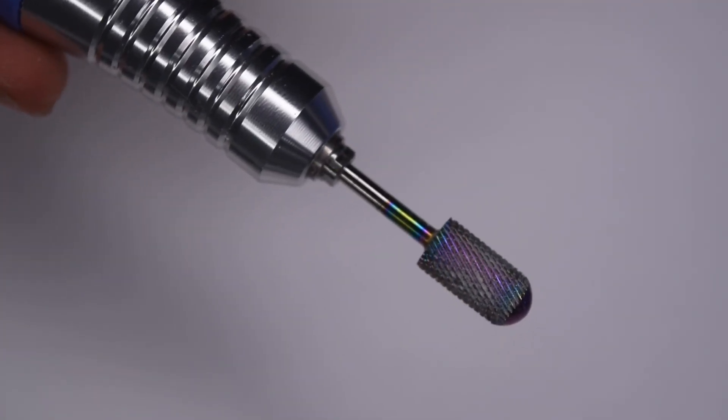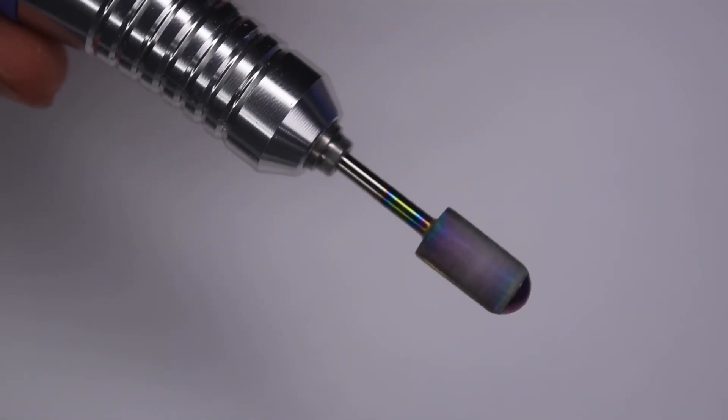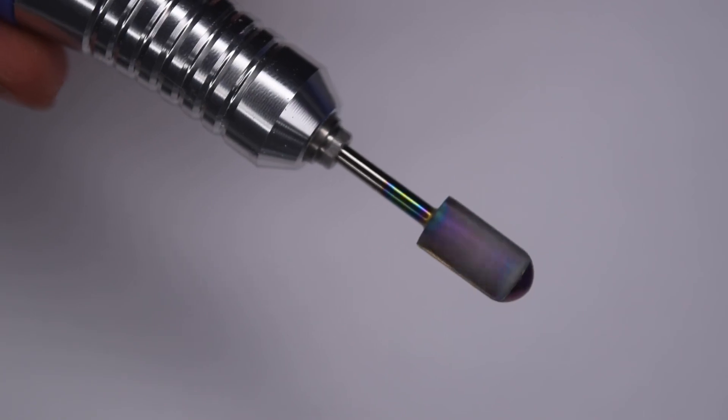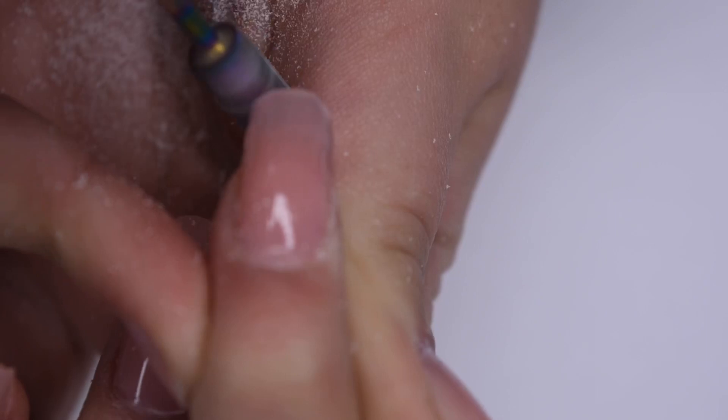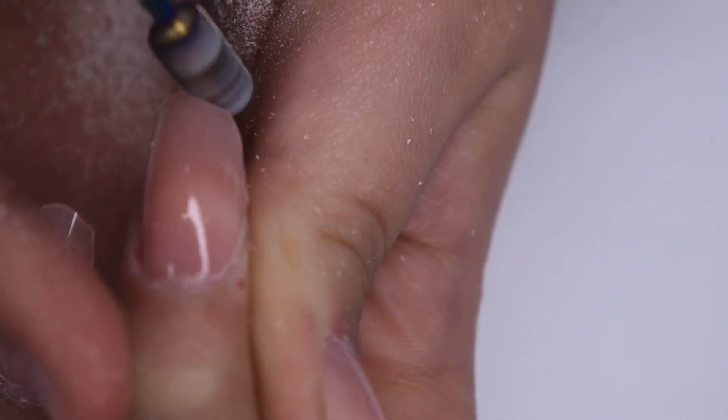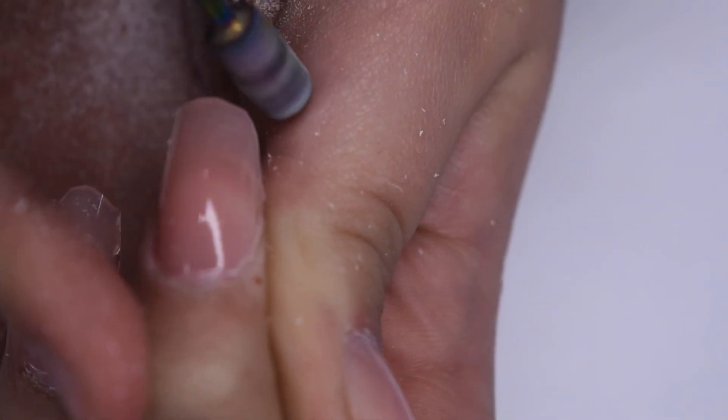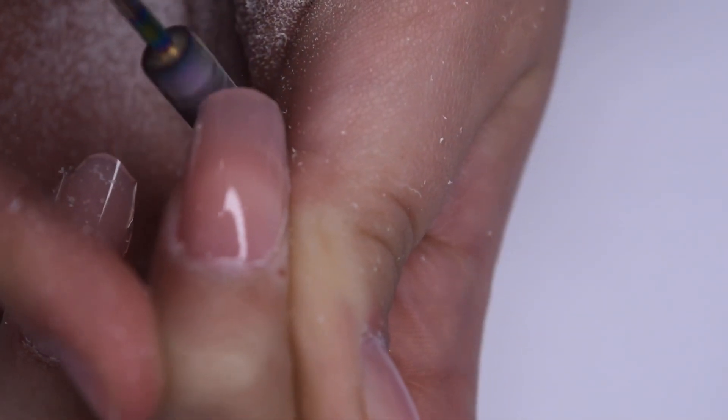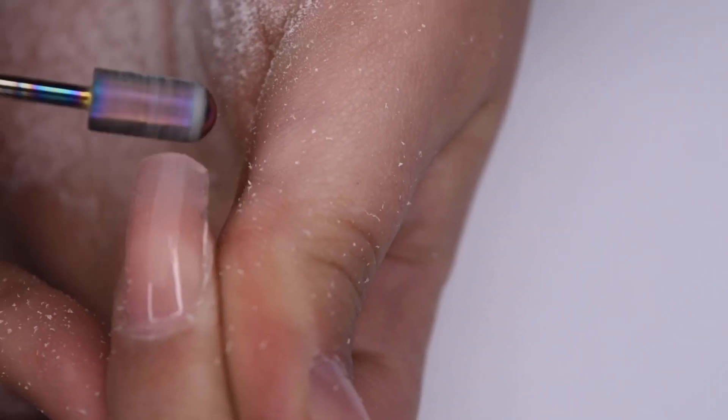And for my filing, I'm going to be using my McCarty file with this safety bit. And first I'm going to start by taking off any extra length, and I made these nails a little bit longer than I expected to keep them, just to make sure that I had enough product where it was needed so I didn't have to go back and add any. Because you can always take product away, it is a little bit harder to go in and add more.